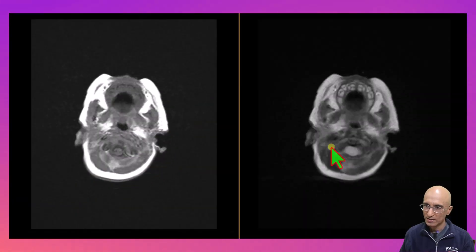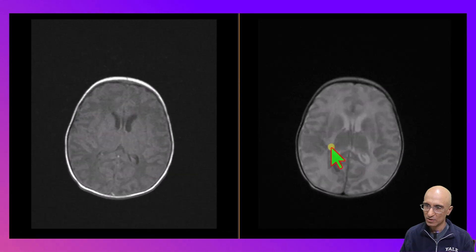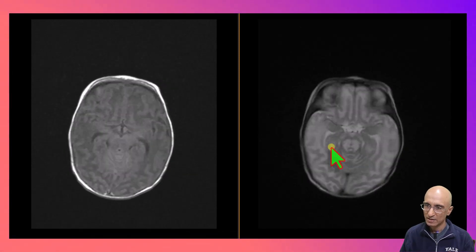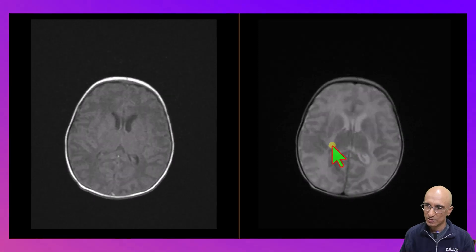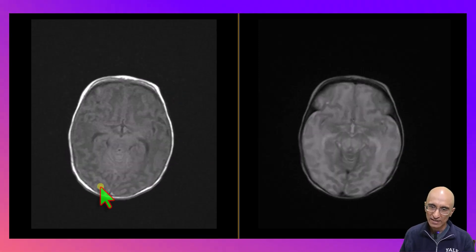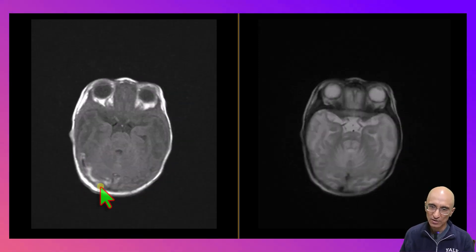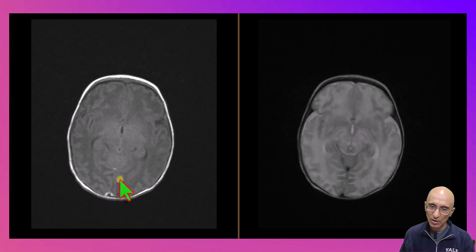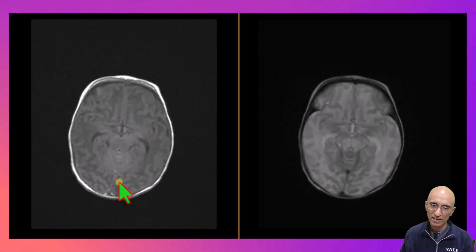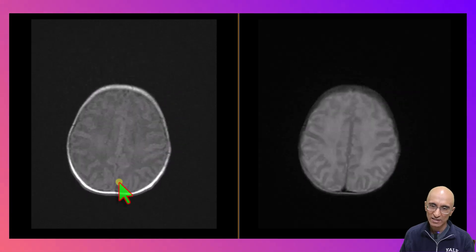On the proton density and T2 images, which are on the right of the screen, you can clearly identify edema in these regions. There is also suggestion of slightly diffuse edema in the white matter, although this can be challenging in the neonatal period. On the T1 axial images on the left, you can see a small amount of subdural hemorrhage along the posterior convexities and the tentorium, which is not an uncommon finding in normal vaginal delivery.